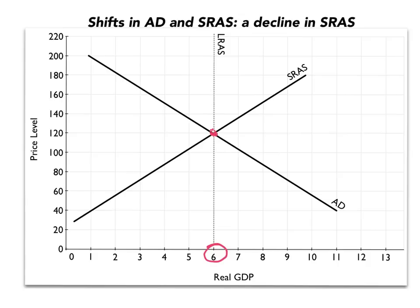So we're experiencing a price level of 120 and a real GDP of 6. Now oil prices shot up rapidly two times in the 1970s. This is one of the known shifters of the short-run aggregate supply curve because it affects cost of production for many, many types of producers. As costs of production rise, you can think about the movement in the short-run aggregate supply curve in one of two ways. The first is that at every quantity, producers need to charge more because of the increased cost of production.